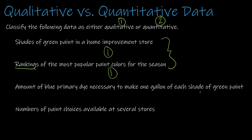I do want you to note the difference between shades of green and rankings, because later when we look at a different way of categorizing variables, you'll see those are two different types of qualitative variables. The amount of blue primary dye necessary to make one gallon of each shade of green — we're looking at a degree or measurement of something, so that is quantitative. And the number of paint choices available at several stores — we're dealing with numbers we'd find value in averaging, so that is also quantitative. Note the difference between these two quantitative examples.